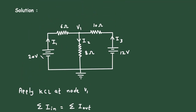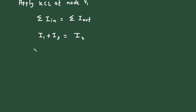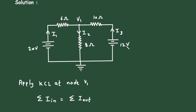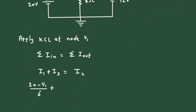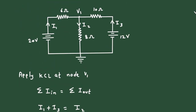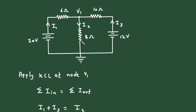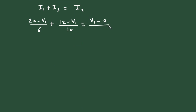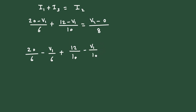Now let us write the currents in voltage form. I1 will be (20 minus V1) divided by 6, plus I3 will be (12 minus V1) divided by 10, is equal to I2 which is (V1 minus 0) divided by 8. Expanding: 20/6 minus V1/6 plus 12/10 minus V1/10, and taking V1/8 to the left side gives minus V1/8.